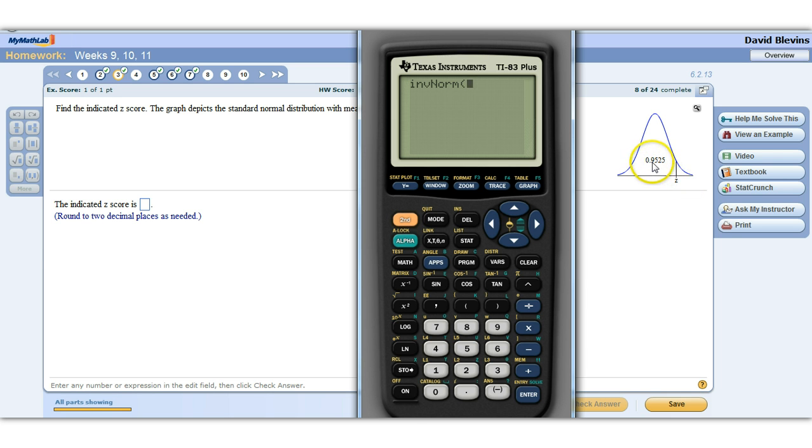So we're going to put in this 0.9525. Close it off, and then it's going to return this z-score that we're looking for. So 1.66959.